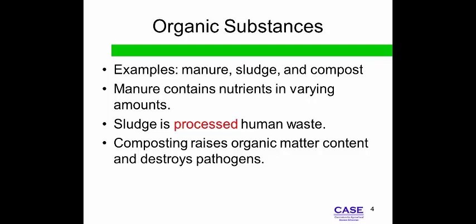Sludge can have human pathogens and heavy metals present, and must be used according to state and federal guidelines. Sludge is most often applied to fruit, seed, and grain crops. If the pH of the soil is above 6.5, it will bind the heavy metals from the sludge and render them inactive. The composting process eliminates most large particles as well as pathogens.